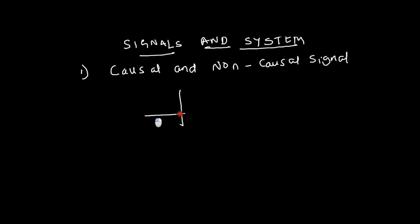A signal is said to be causal if x of t is equal to 0 for t less than 0 and it presents some f of t for t greater than 0. That is, if the signal does not exist for t less than or equal to 0, then it is called a causal signal.